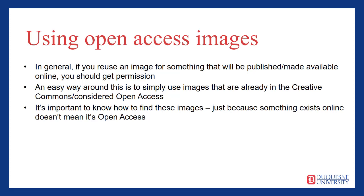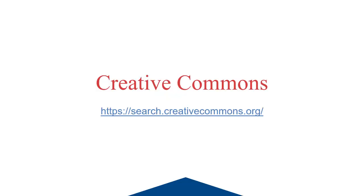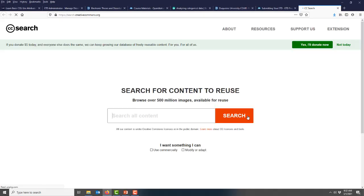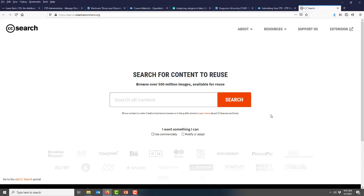Here are a few websites that you can use to easily find images that are in the Creative Commons. Firstly, you can simply go straight to the Creative Commons. Just type a search term into this search bar and you'll get a bunch of great open access results.